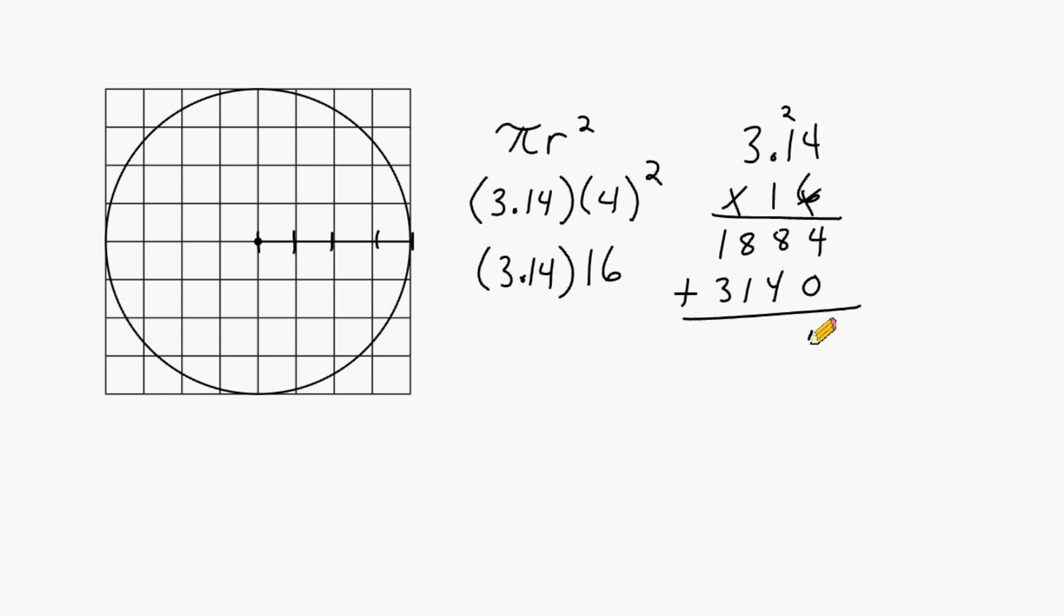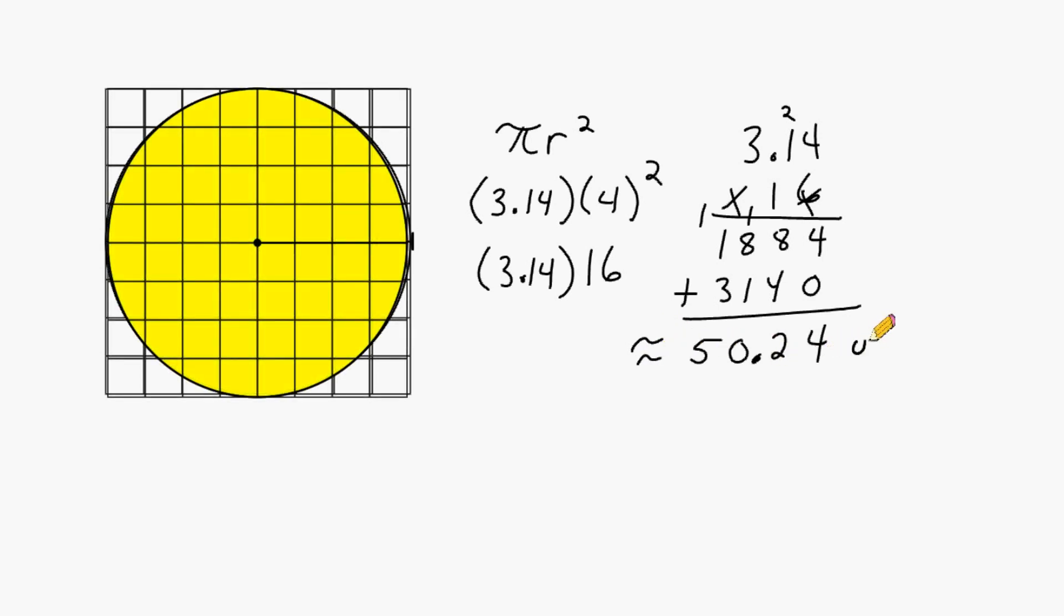So now we just have to add up our digits. So we have a 4 here, 12 here, carry the 1, 10 here, and 5 in this column. And don't forget we have a decimal in the problem, which means we need one in our answer, and the decimal goes right here. So the area of this circle is approximately equal to 50.24 square units.